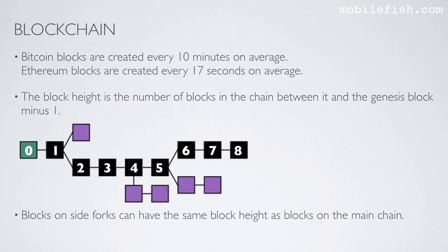Bitcoin blocks are created every 10 minutes on average. Ethereum blocks are created every 17 seconds on average. The block height is the number of blocks in the chain between it and the Genesis block minus 1.